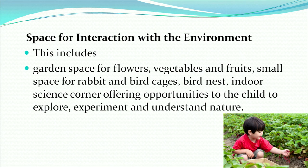What kind of space is required for interaction with the environment? It includes garden space for flowers, vegetables and fruits, a small space for rabbits and bird cages, bird nests, and indoor science corners offering opportunities for children to explore, experiment and understand nature. For example, you might give children a tub filled with water and place hard, soft and plastic toys in it so that children can explore what sinks and what floats. This is for the exploration and learning of the children.